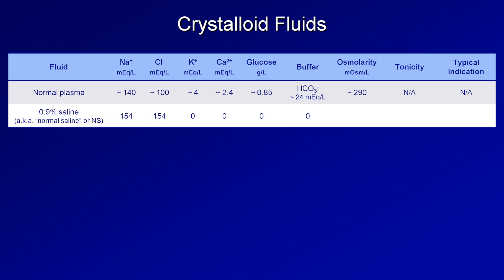The predicted osmolarity of normal saline is simply 154 plus 154, or 308 mOsm per liter. Normal saline is usually referred to as an isotonic fluid, meaning that when infused it has no effect on intracellular volume because its effective osmolarity is the same as that within the cells. Occasionally you'll come across an intern who points out that 308 is higher than 290, so normal saline is actually slightly hypertonic — hence my quotation marks around isotonic.